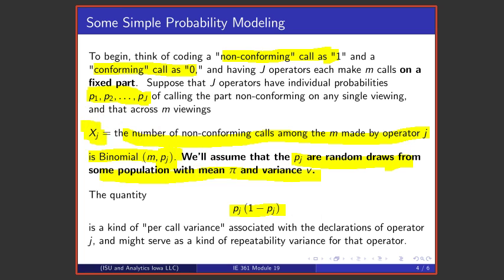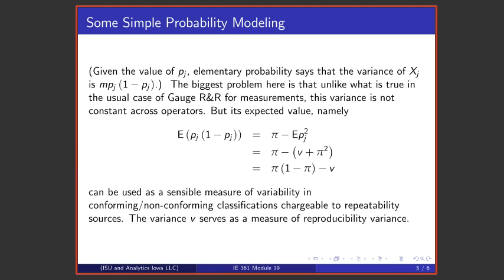Well, that's because the operator's count of number of non-conforming calls, being binomial, has a variance that is M times that quantity p times (1 minus p).